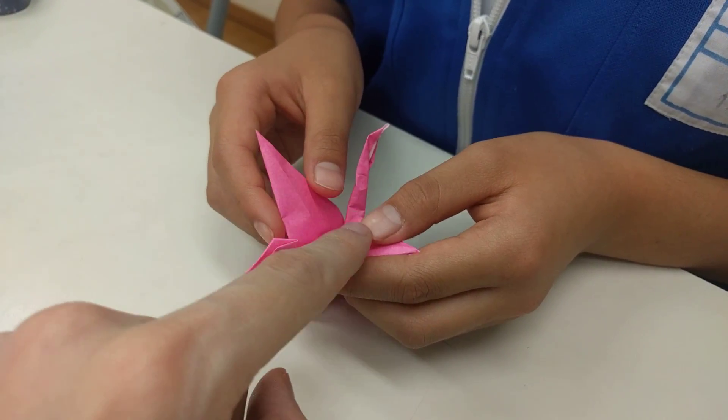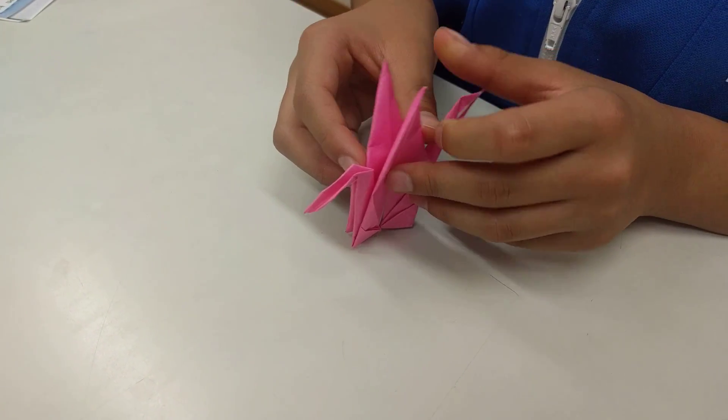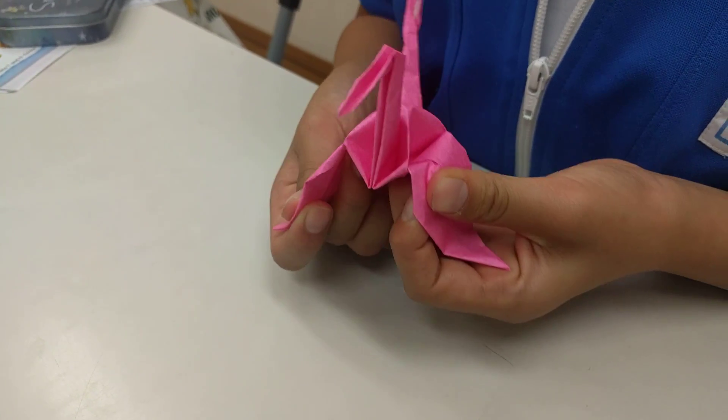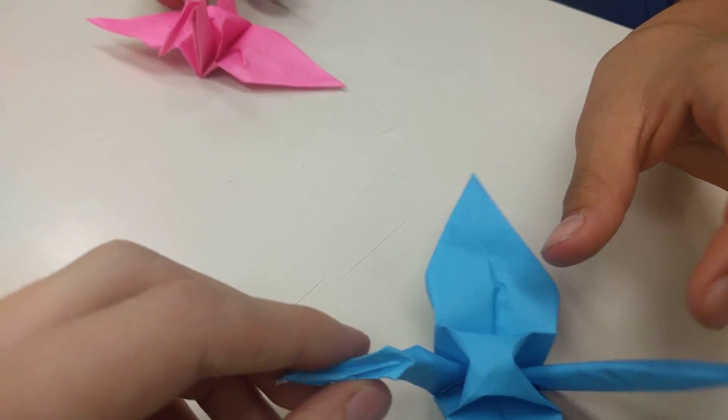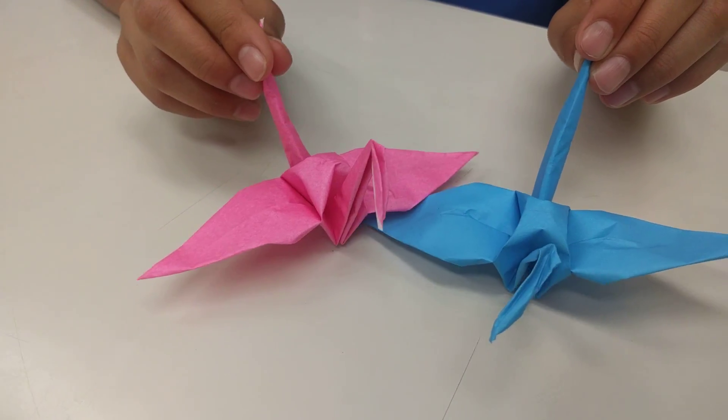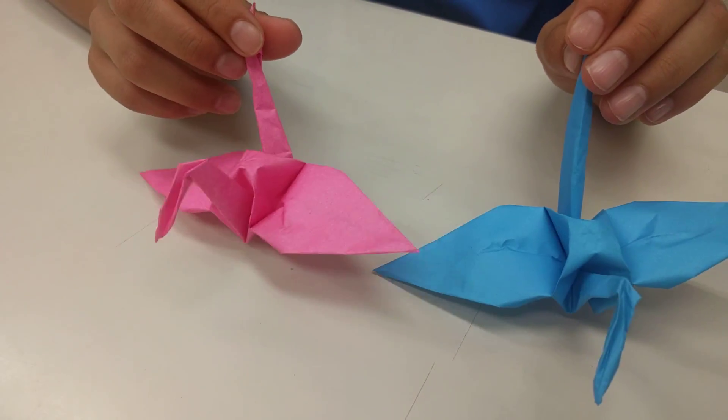These are the wings. Mm-hmm. This is the tail. So to finish, open the wings. Two cranes. Easy. Good luck. Can you say good luck? Good luck, good luck. See you.